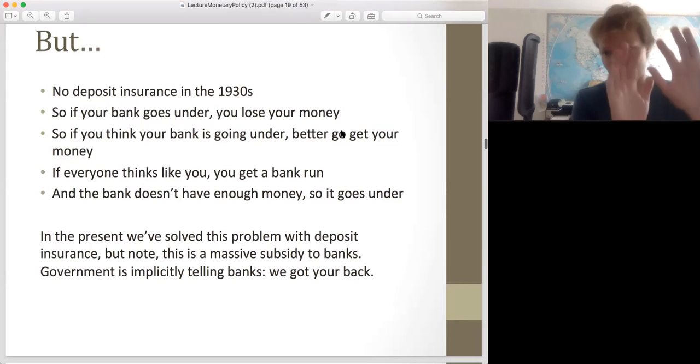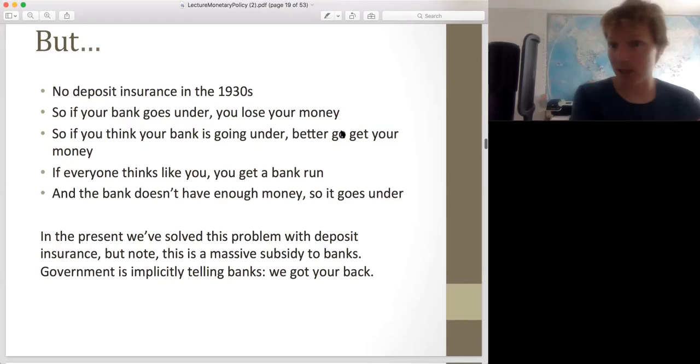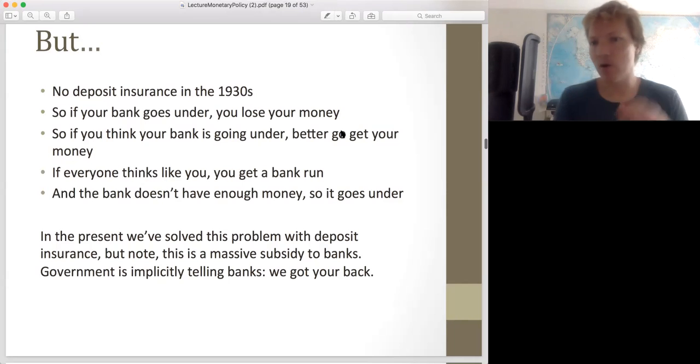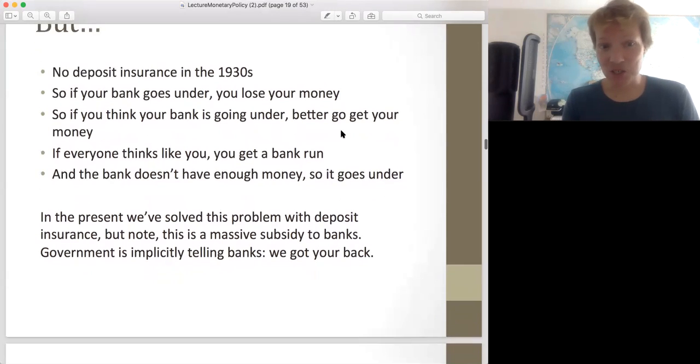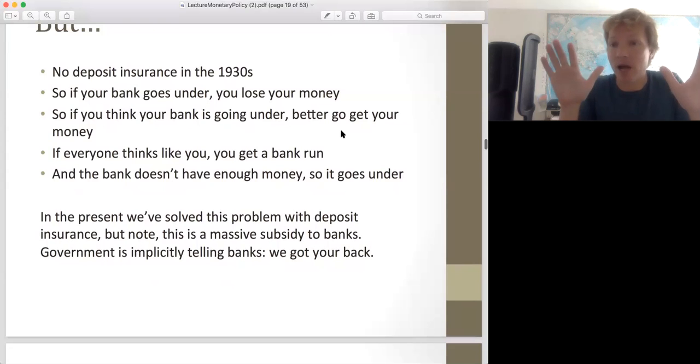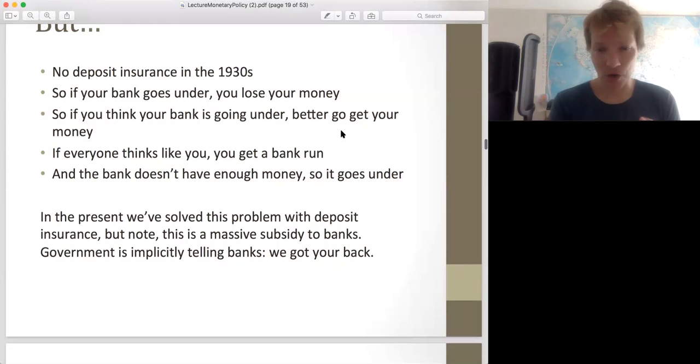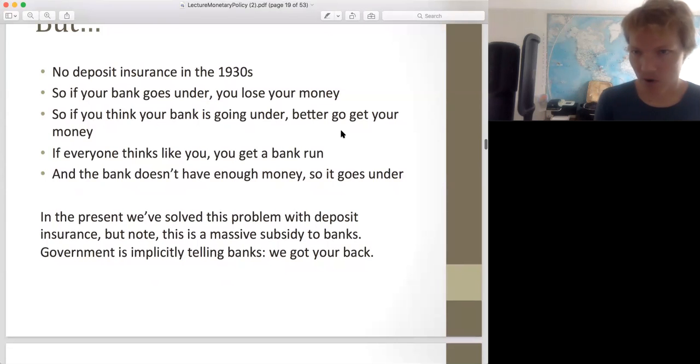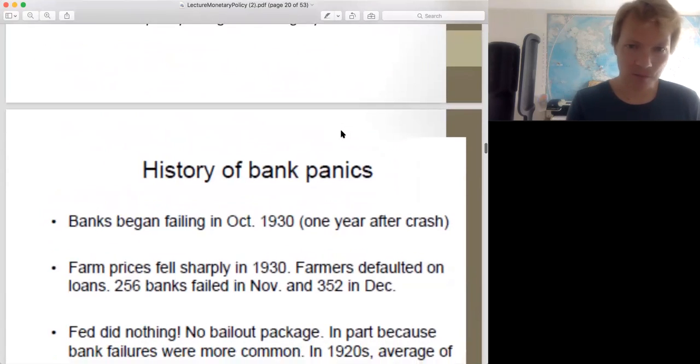So the deposit insurance wasn't there in the 1930s. So we had this process where the banks would start to get in trouble, then everyone would rush to get their money and then they'd really be in trouble and fail. Now we don't necessarily have that problem. We have deposit insurance, but we have a different problem because of deposit insurance. Basically, deposit insurance is the federal government saying to banks, we got your back. Don't worry. Your source of income, which is loaning other people's money out, we're guaranteeing that. So it's like this implicit subsidy to banks from government saying we'll bail you out. This is like a direct written in the law, we will bail out your deposits. And this encourages risky behavior on the part of banks. This is what we call moral hazard in economics.